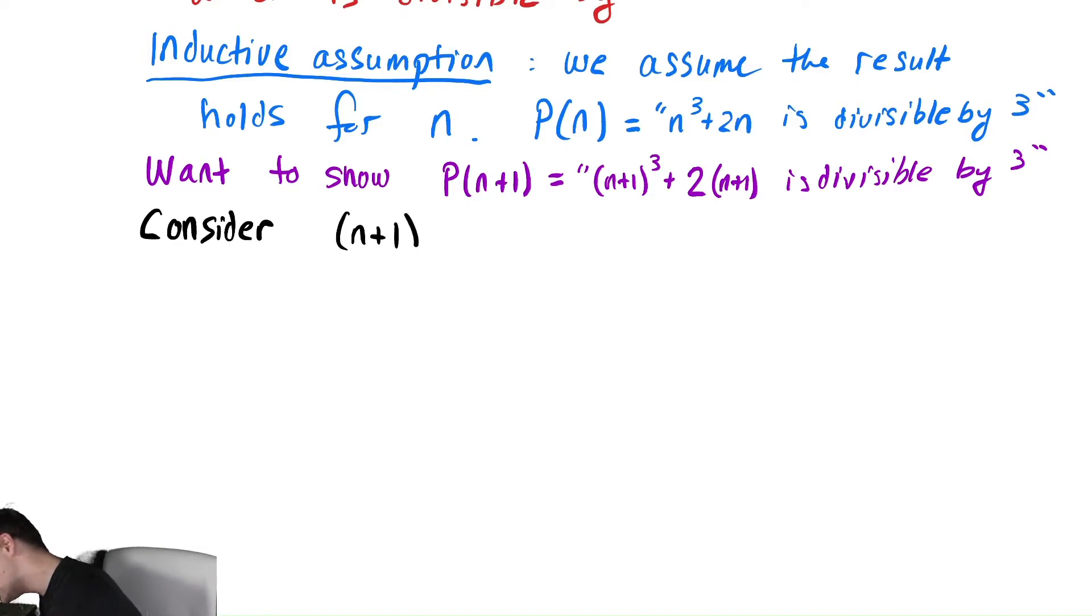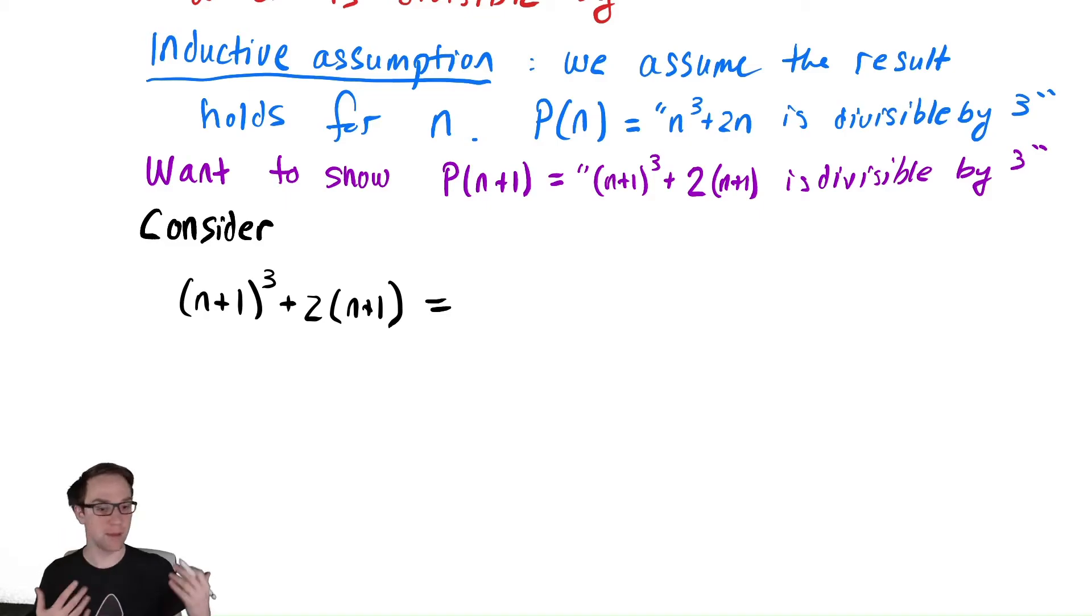(n+1) cubed plus 2 times (n+1). This is going to be a bit of a big expression, so we're actually going to write down the next line and give ourselves plenty of space to cube that. You could cube this out. You maybe have seen the binomial theorem before which allows us to do this in a much faster way. (n+1) cubed is equal to n³ + 3n² + 3n + 1.